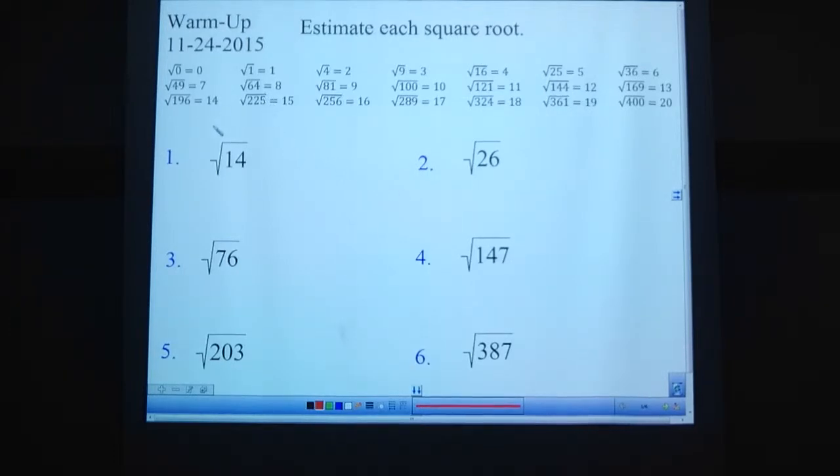So for instance, problem number 1 here, square root of 14. Go down the line here, 0, no, 1, no, 4, 9, ah, 16, that's bigger than 14, so 14 is between 9 and 16. The way I like to write this, you don't have to write it this way, but most people say it helps. Square root of 9, that's 3, square root of 16 is 4, so it's between 3 and 4.